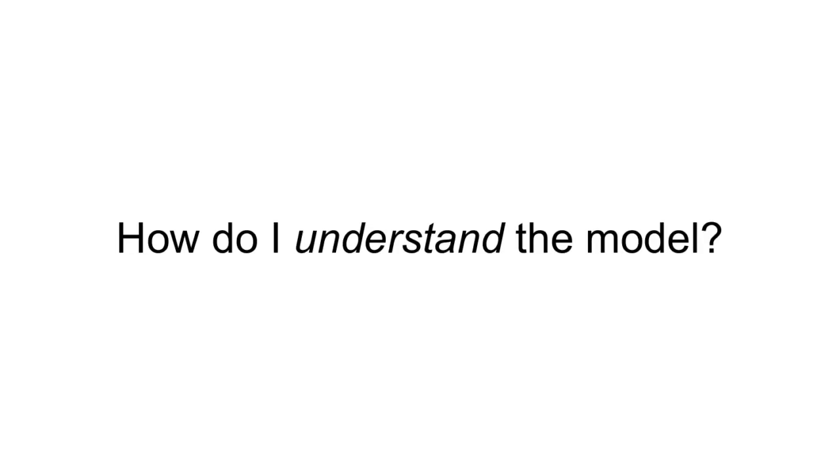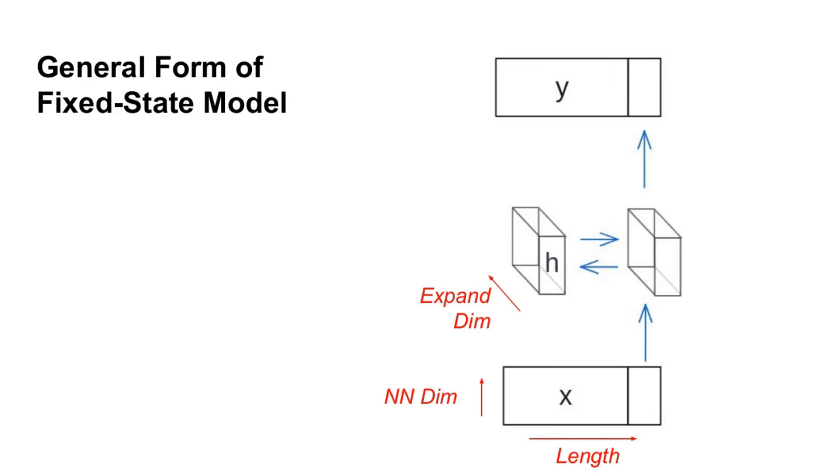Whenever I read a deep learning paper, the first thing I do is try to understand the shapes of all the objects involved. To do this, we're going to use a schematic diagram that tries to explain the shapes of a general fixed state sequence model.